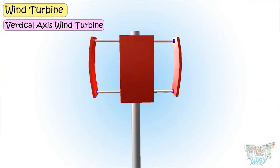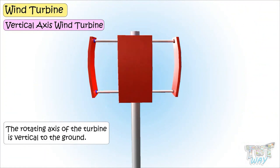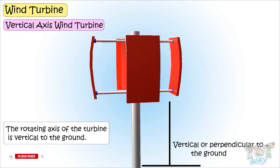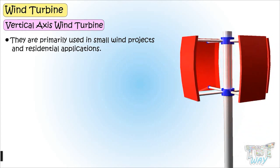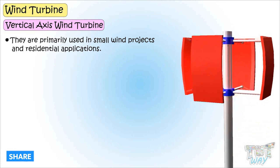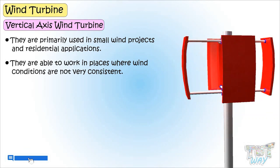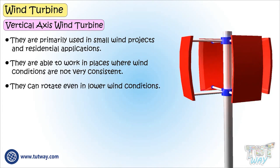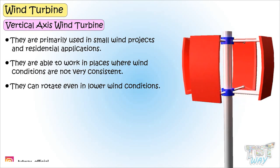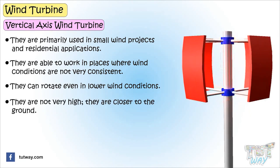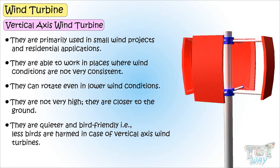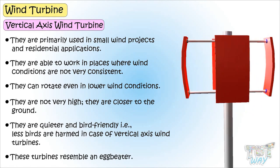In the case of vertical axis wind turbines, the rotating axis of the turbine is vertical, or perpendicular, to the ground. They are primarily used in small wind projects and residential applications. They can work where wind conditions are not very consistent and can rotate even in lower wind speeds. They are closer to the ground, quieter, more bird-friendly, and they resemble an egg beater.